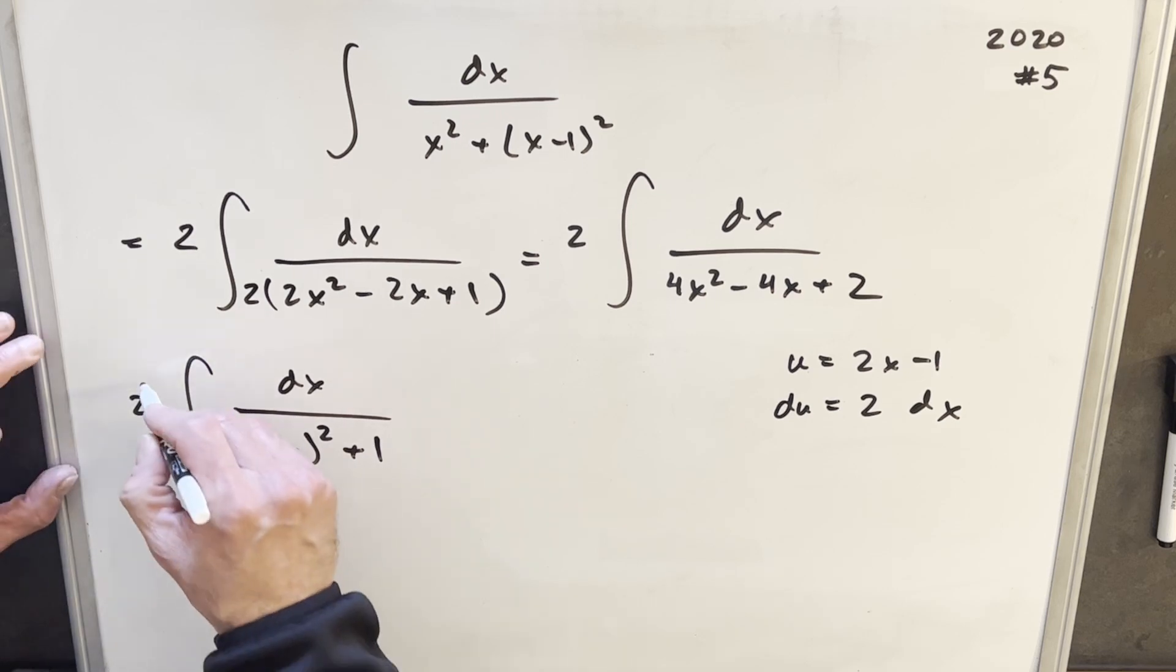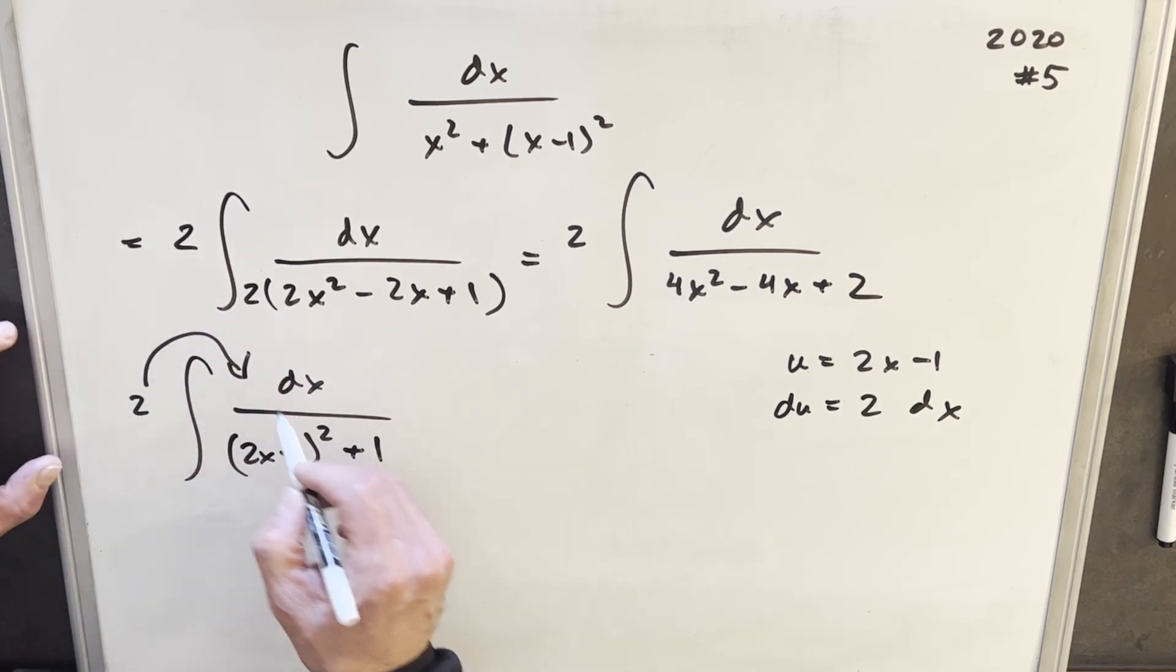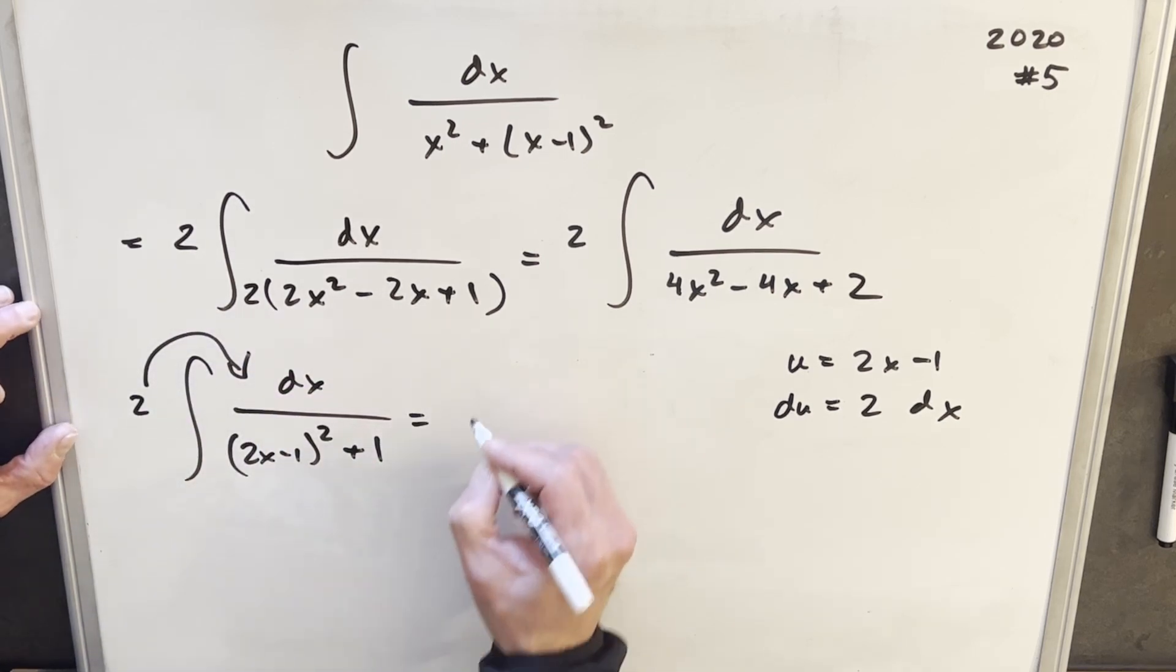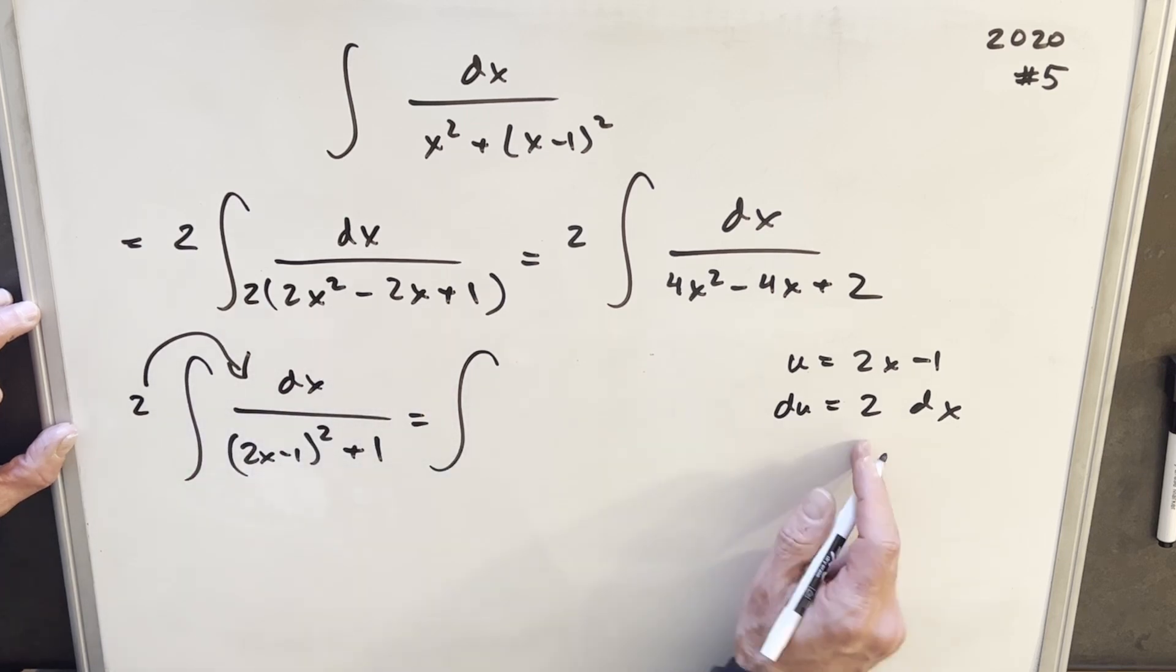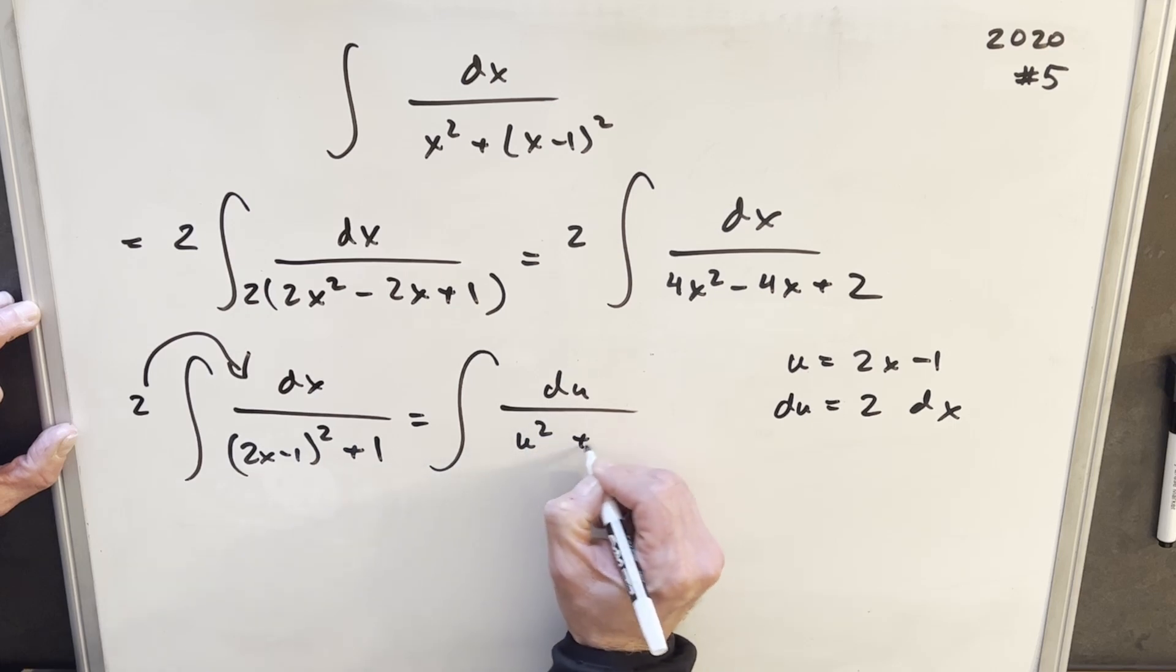We don't have a 2 here, but we can just put it back in. So if we rewrite this with 2 dx in the numerator, there's our du. Then here's our u. So we're going to have u squared plus 1.